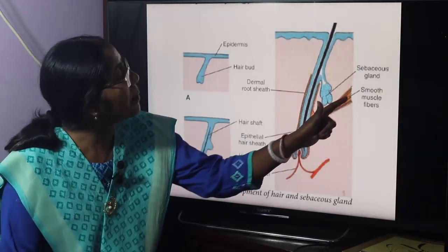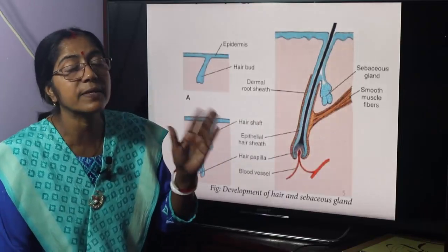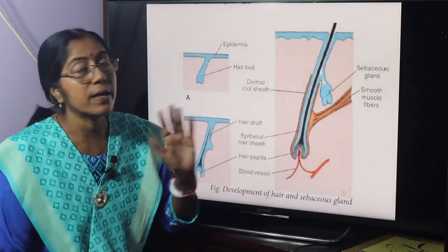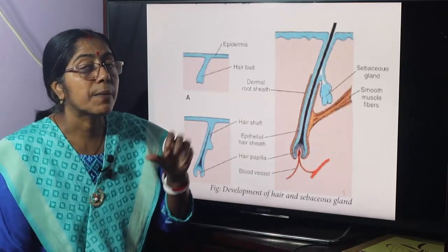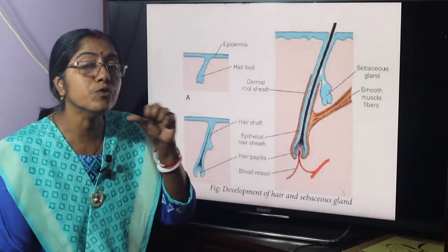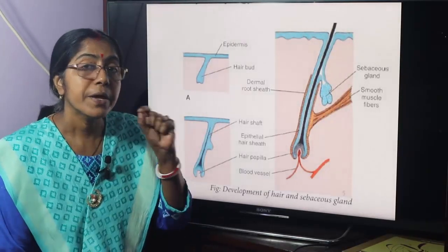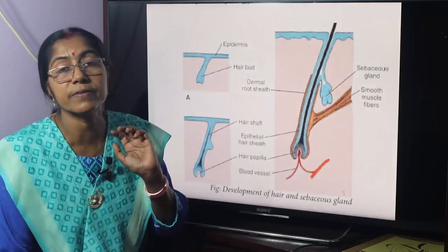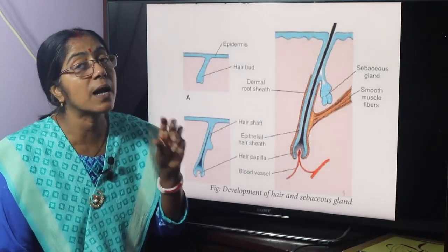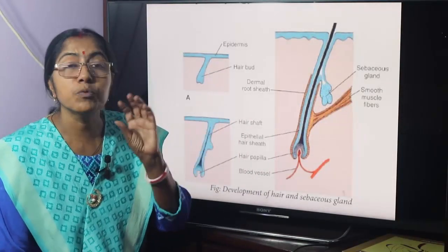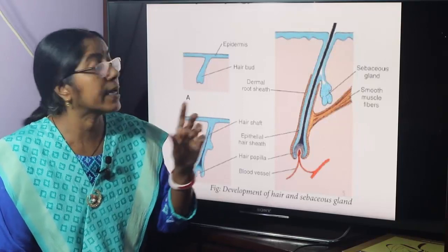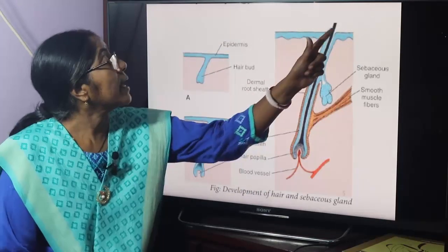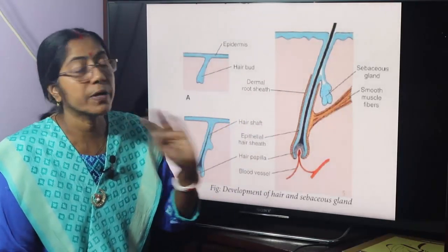The dermal root sheath contains smooth muscle fibers forming a muscle called the arrector pili. Contraction of this smooth muscle causes the hair follicle to become erect, producing what is known as goose bumps.